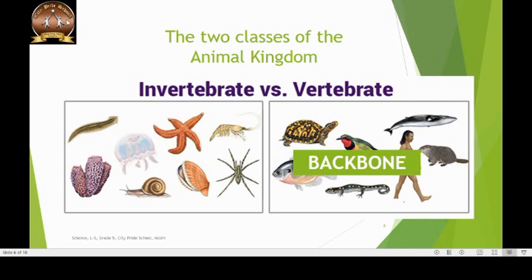The smaller invertebrates are protected by a hard exterior exoskeleton, like in the case of oysters, crabs, snails, etc.